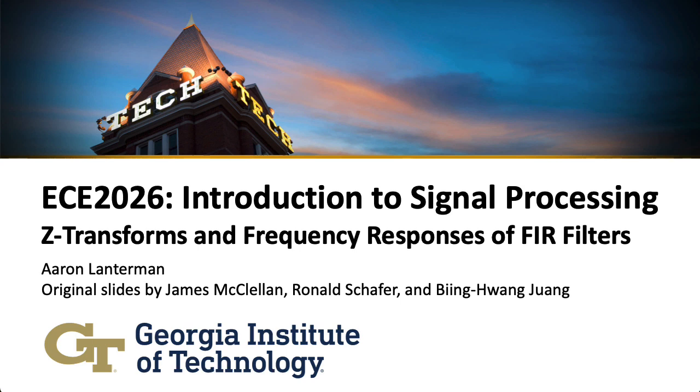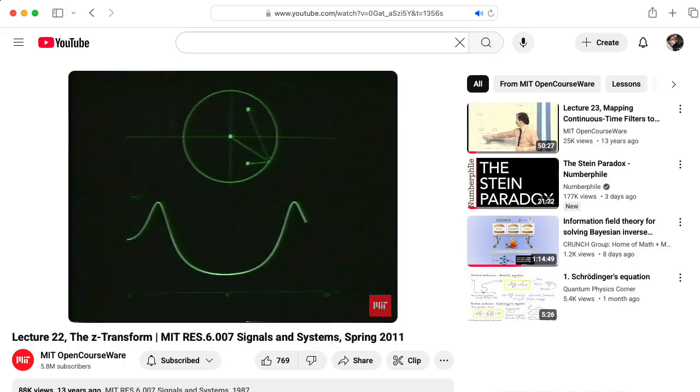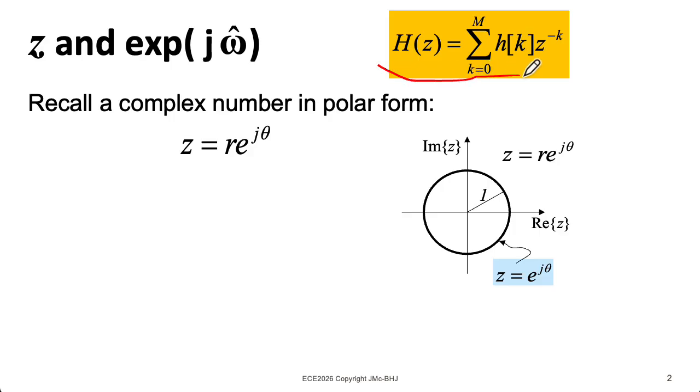In this video, we'll see how Z-transforms can give us insight into the frequency domain behavior of finite impulse response filters, although as we'll see later, the general ideas also apply to infinite impulse response filters. Here we have the formula for the Z-transform of an impulse response of a causal FIR filter of order m. We call the resulting Z-transform either a system function or a transfer function.